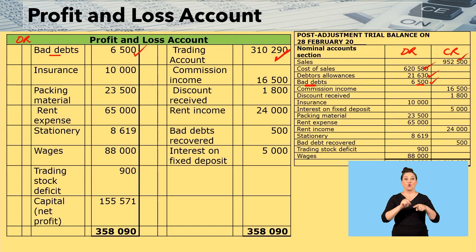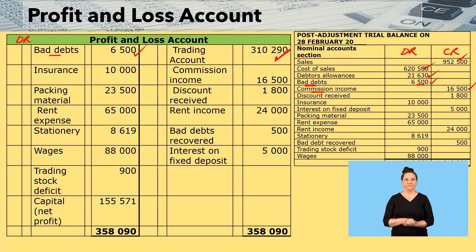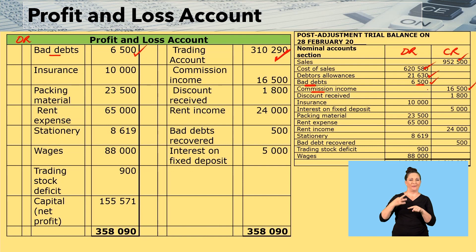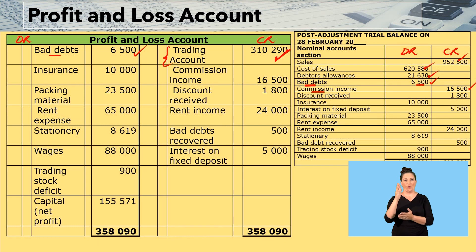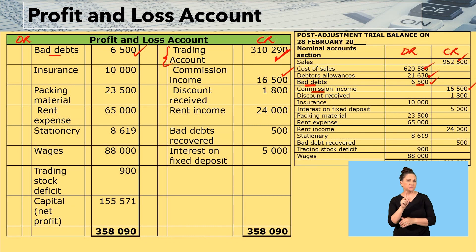The next one is commission income — $16,500. The moment you have income, in this case commission income, you will add it to your gross profit from the trading account. So you bring it to the credit side. That is how you see $16,500 on the credit side.